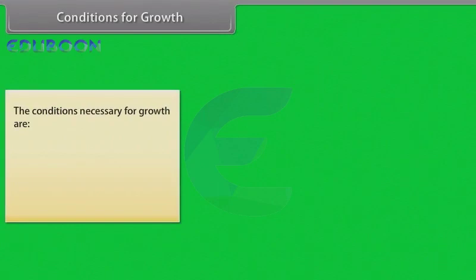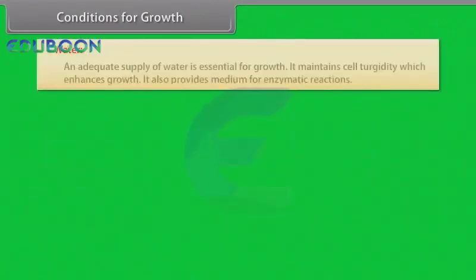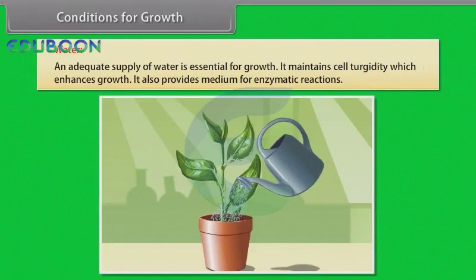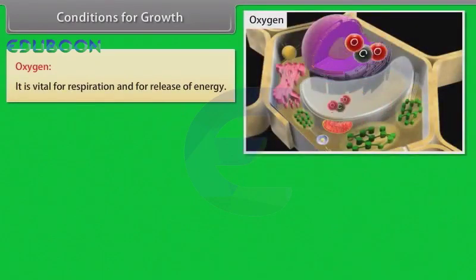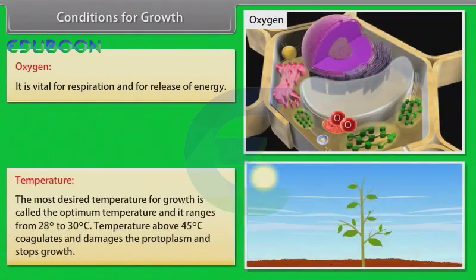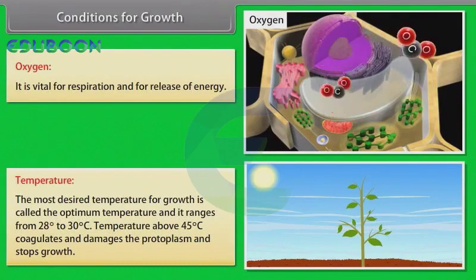Conditions for growth: Nutrients — enough supply of nutrients is necessary for synthesis of protoplasm and acts as a source of energy. Water — an adequate supply of water is essential for growth; it maintains cell turgidity which enhances growth and also provides medium for enzymatic reactions. Oxygen — it is vital for respiration and for release of energy. Temperature — the optimum temperature for growth ranges from 28°C to 30°C. Temperature above 45°C coagulates and damages the protoplasm and stops growth.